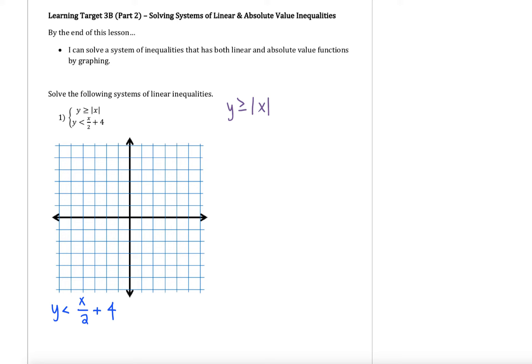Let's check this. For our first inequality, y is greater than or equal to the absolute value of x, we are going to have a v-shaped graph since we have an absolute value. That boundary line is going to be solid since we have that equals to bar on our inequality, and since we have an inequality we will also be shading on this graph.